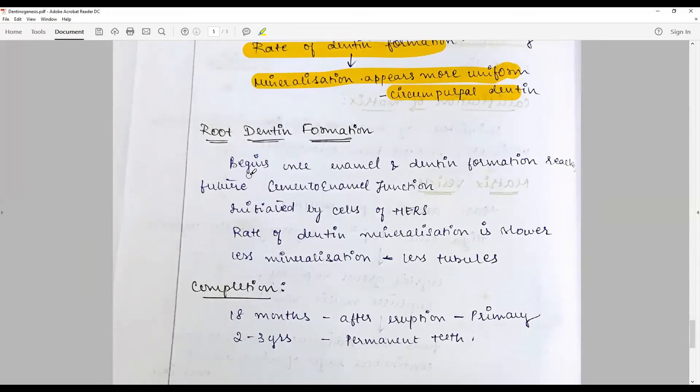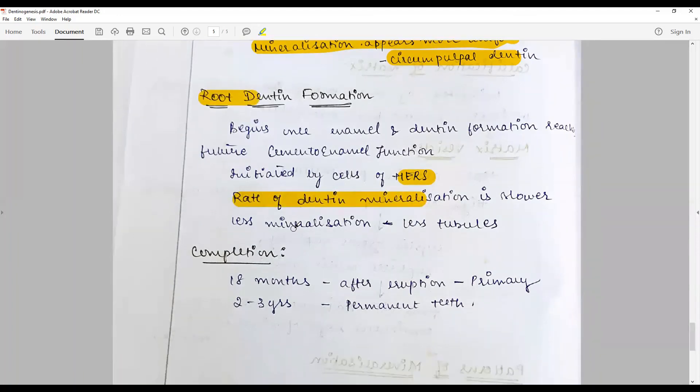For root dentin formation, once enamel and dentin formation reaches the CEJ, epithelial Hertwig's root sheath formation occurs. This stimulates radicular dentin formation, but it is much slower and less tubular.